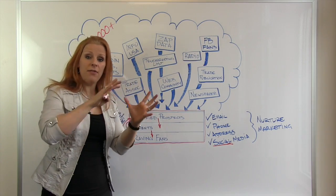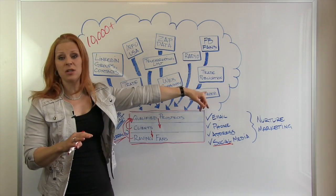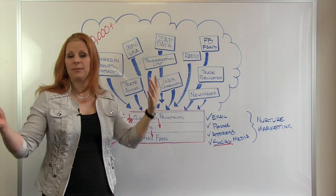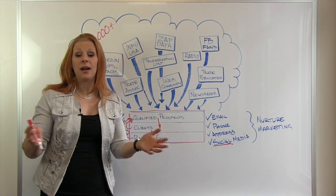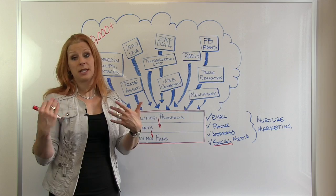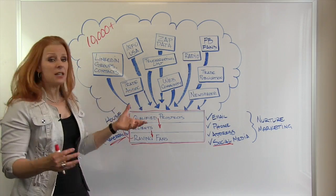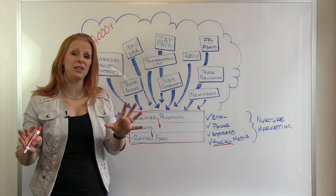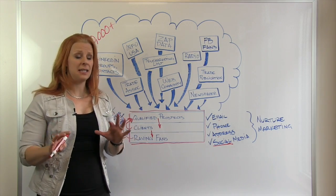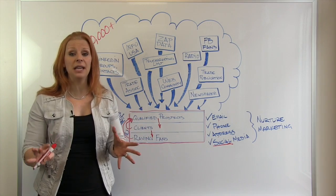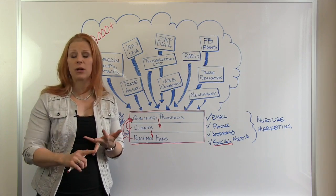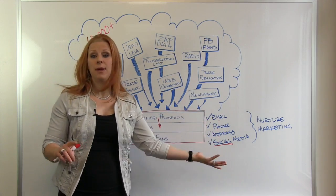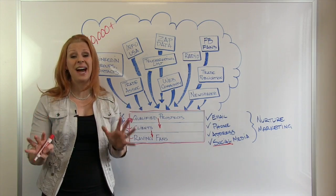Trade publications in your particular niche, newspapers, web communities — like in the IT industry it could be somebody like the VAR Guy. If you're selling to other managed service providers, you could go to that web community. Trade associations. You could go to a website called the SRDS — that's the big database of all the lists you could potentially rent or purchase. Everything from email, phone, mailing addresses — literally hundreds of thousands of lists.